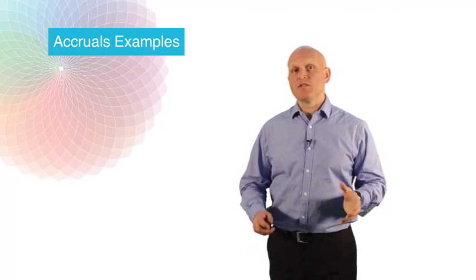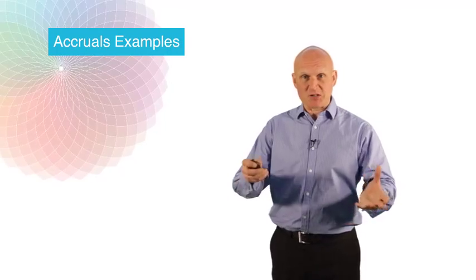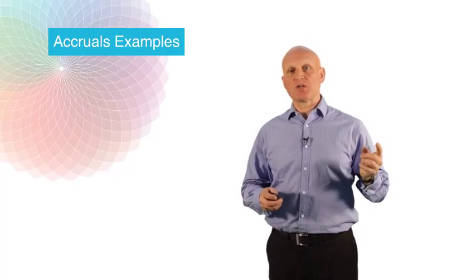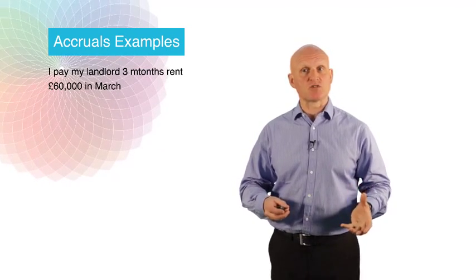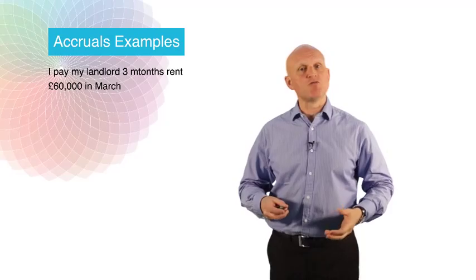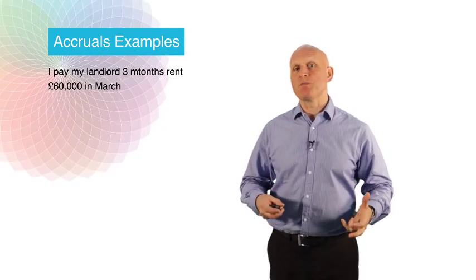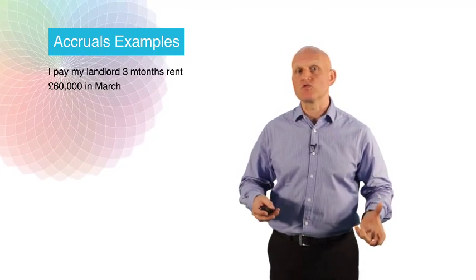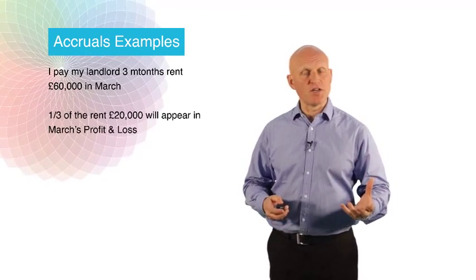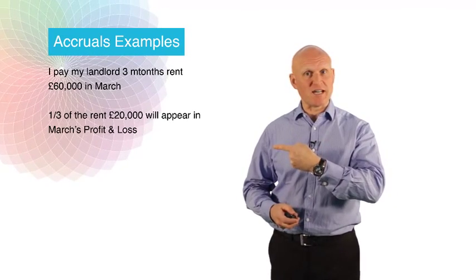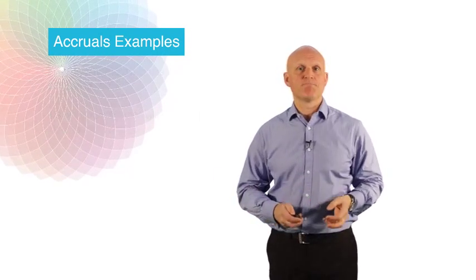Okay, I'm going to give you another few examples on this accruals idea, so I can make sure you've got it, you've got an understanding of it. So let's say a little example is going to come up on the screen here. Let's say I pay my landlord three months' rent of £60,000 in March. So I've paid them the rent for March, April and May. How much would I put into my profit and loss account as rent for March? Have a think about it. If you're thinking £20,000, one third of the rent, the answer's popped up on the screen now, as you can see, then that's the right answer. One third would go in March, one third in April, one third in May.